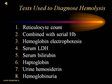Microcytic hypochromic anemias, macrocytic anemias, and normocytic normochromic anemias of chronic diseases can all be treated by general practitioners. However, when it comes to hemolytic anemias, we require the help of our hematologist. Our hematology colleague will conduct: reticulocyte count, serial hemoglobin estimations, hemoglobin electrophoresis, serum LDH, serum bilirubin (particularly indirect bilirubin), haptoglobin, urine hemosiderin, and look for hemoglobinuria. With some of these tests, it will be possible to identify the cause of the hemolytic anemia.